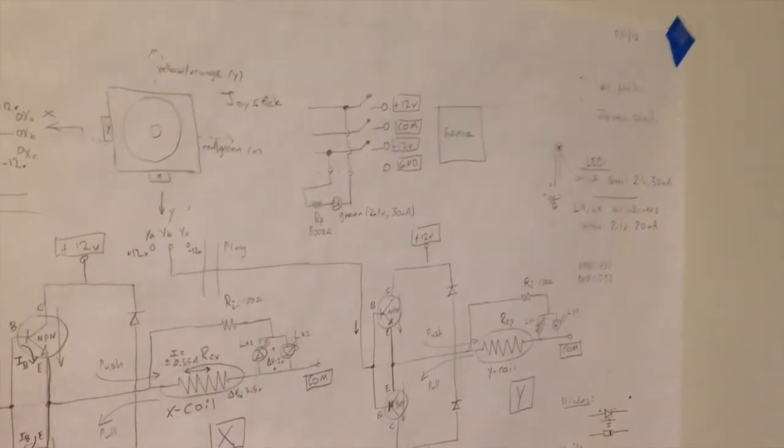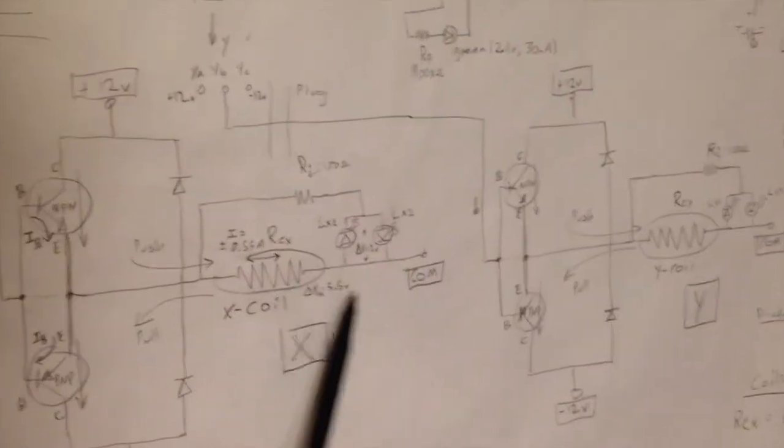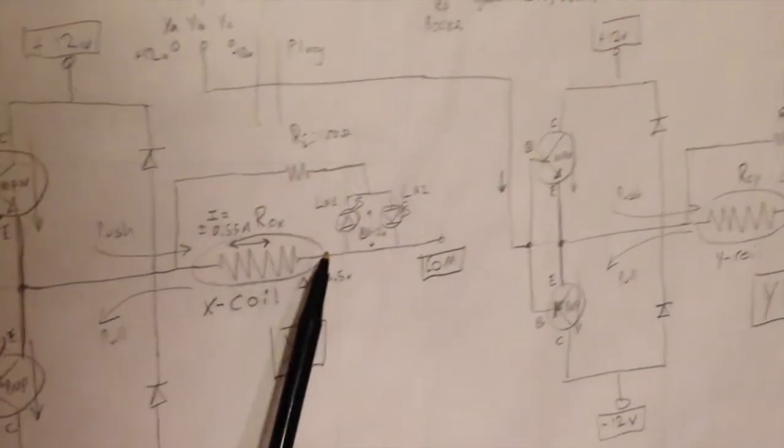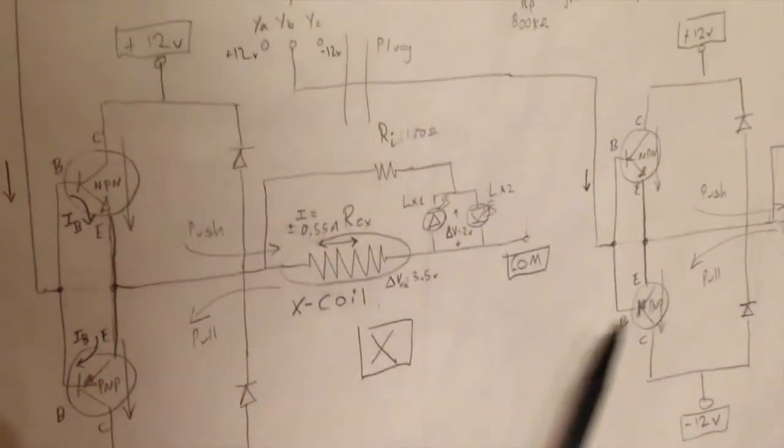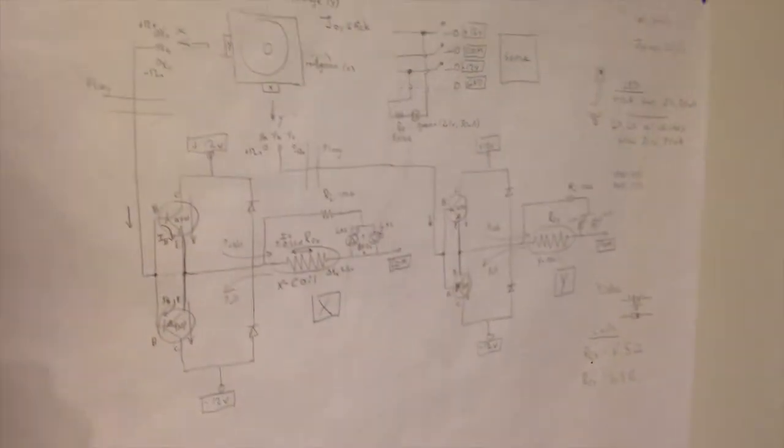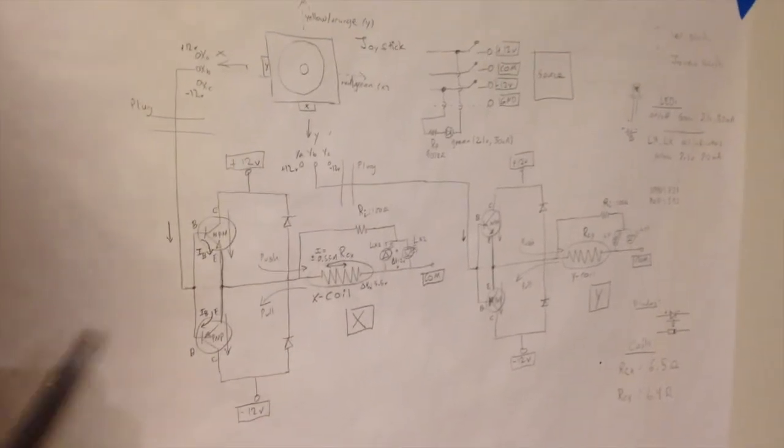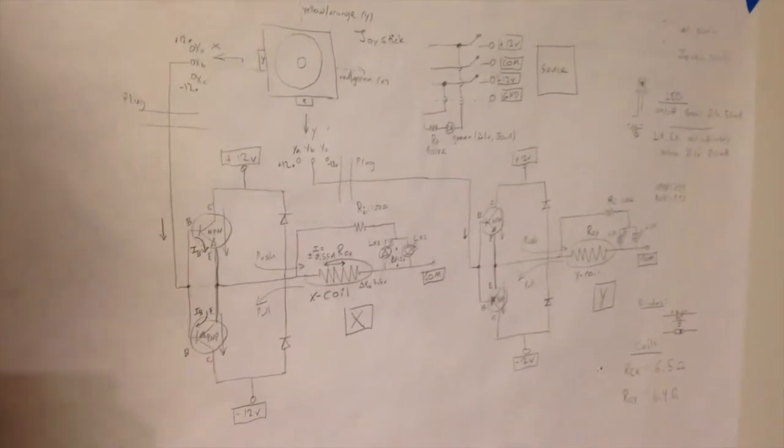The only other little things that we added in were just some indicator lights, which we hooked up between the coil and the common in both cases. That ended up being quite helpful so that in the testing phases we could tell if we had a magnetic field on or what direction it's pointed.